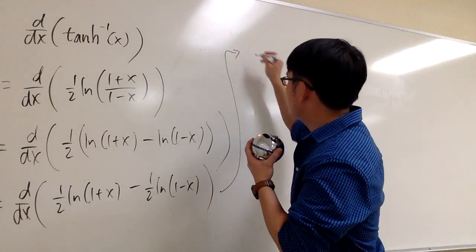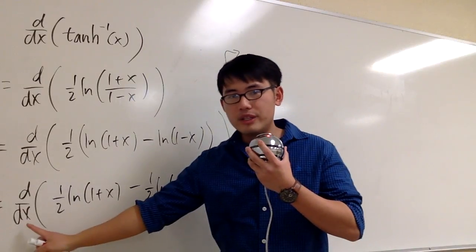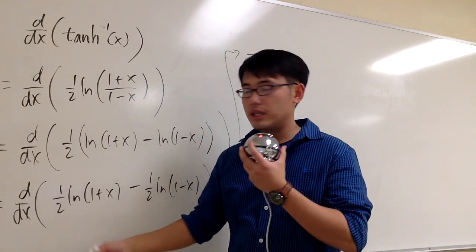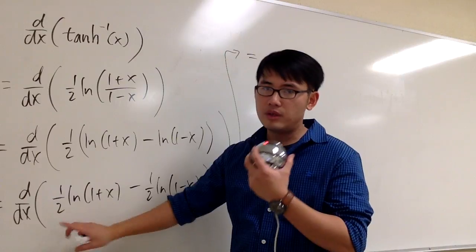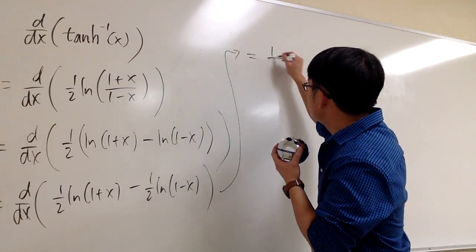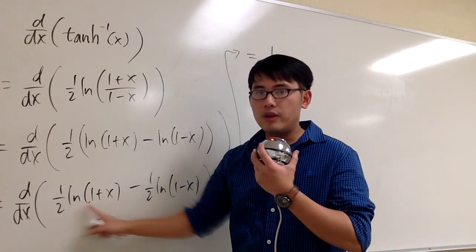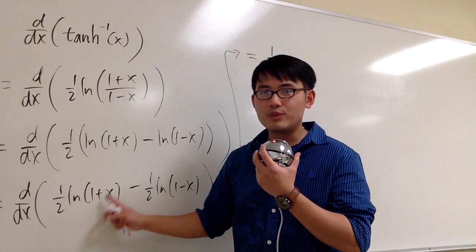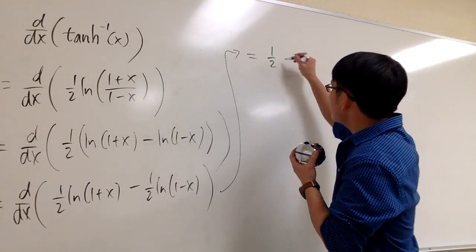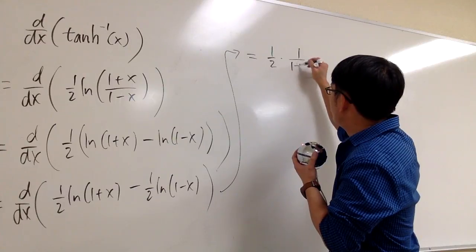I'll put down the result right here. We are going to differentiate the first part first. We have the 1 half, that's the number, so we are just going to put that down for now. And what's the derivative of ln of 1 plus x? It's just 1 over that, right? So we multiply by 1 over 1 plus x.